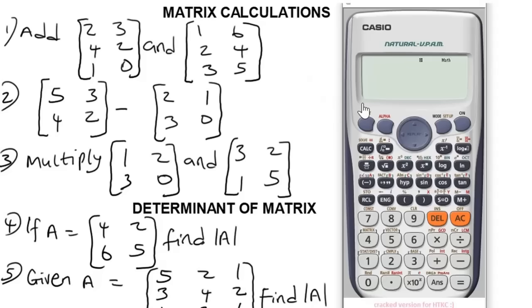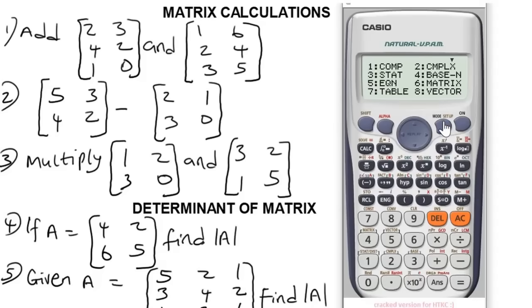The next thing you have to do is put your calculator in matrix mode — that's the mode of the calculator that we use to solve these problems. Go to Mode, and matrix is option 6.